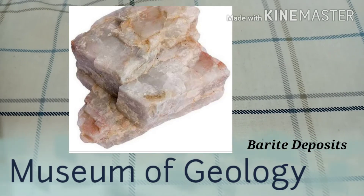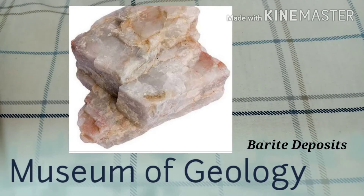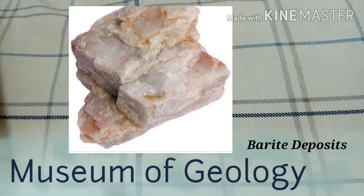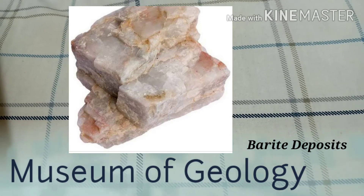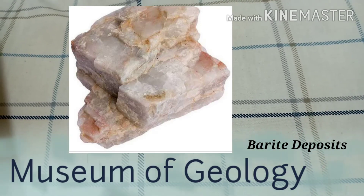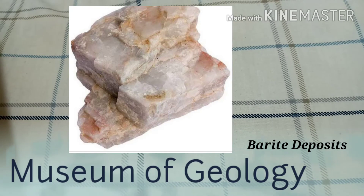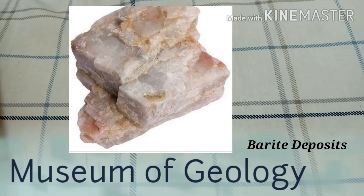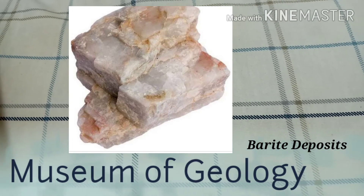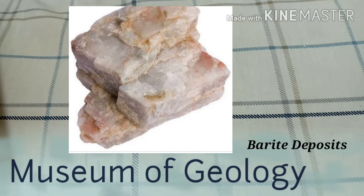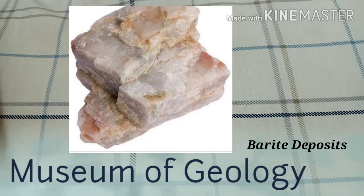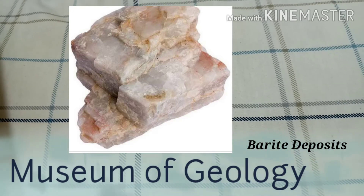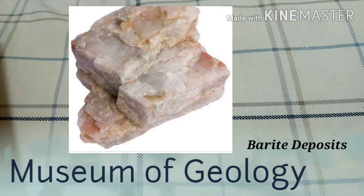Barite is found in Baia Sprie in Romania, and in Westmoreland, Cornwall, Cumberland, Derbyshire, Durham, and Surrey in the UK. Other deposits are in China, India, Peru, Canada, Morocco, and Turkey.